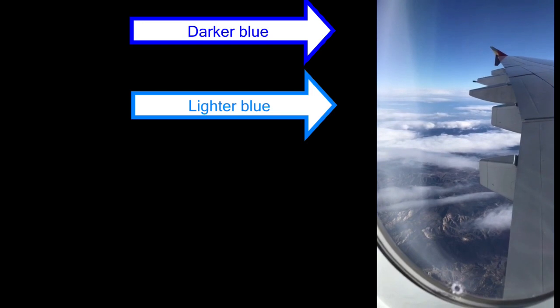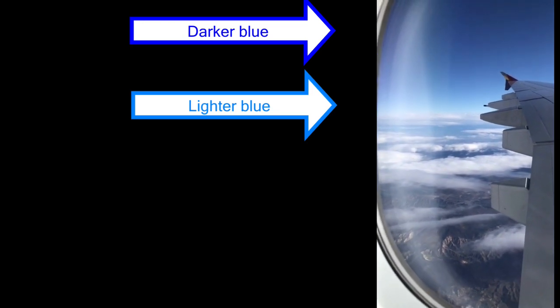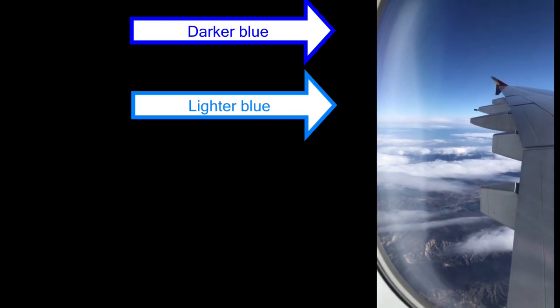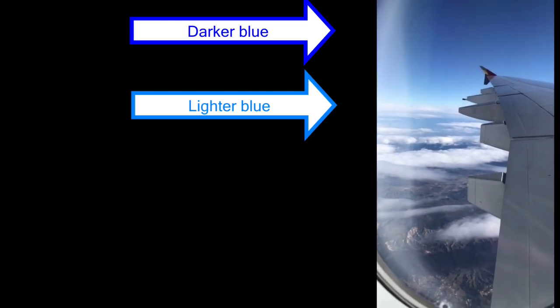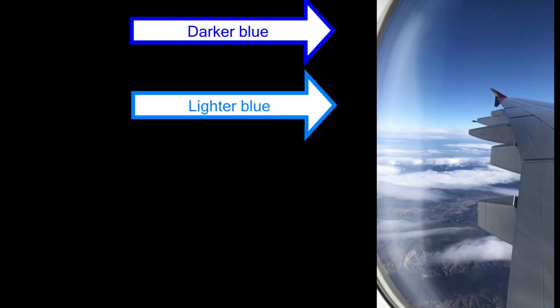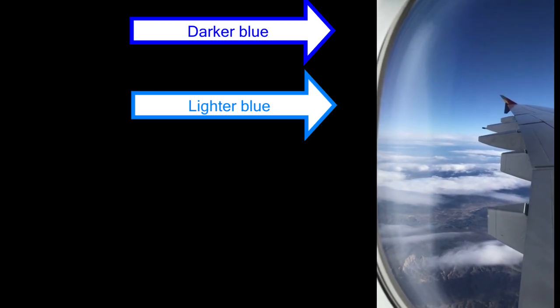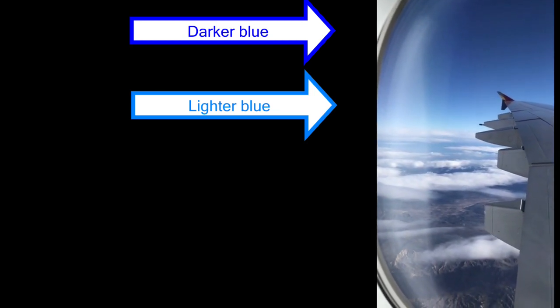If you have ever looked out a plane window when it is 6 miles above the ground, you may have noticed this transition from lighter blue near the ground to a darker blue as the atmosphere fades towards outer space.